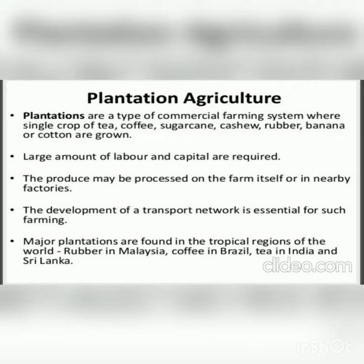Plantation agriculture is a type of commercial farming system where a single crop — such as tea, coffee, sugarcane, cashew, rubber, banana, or cotton — is grown. Large amounts of labour and capital are required. The produce may be processed on the farm itself or in nearby factories. Development of a transport network is essential for such farming.